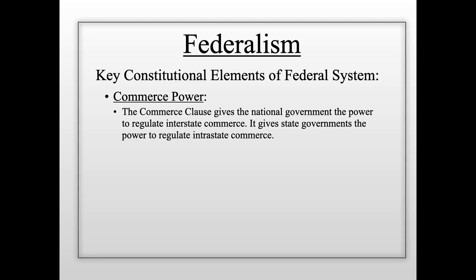The commerce power of the Constitution is explained in a part called the Commerce Clause. The Commerce Clause gives the national government the power to regulate interstate commerce and gives state governments the power to regulate intrastate commerce. Interstate commerce is commerce conducted between two different states. For example, if I buy something on Amazon here in New York and Amazon ships it to me from a warehouse in Florida, the truck goes through different states — that is what we mean by interstate.